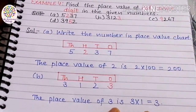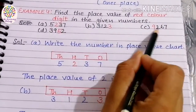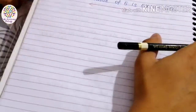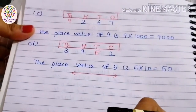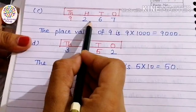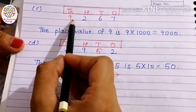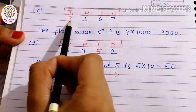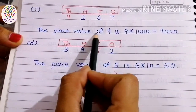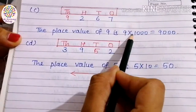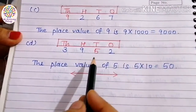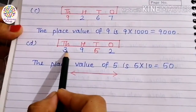Next part is 9267. We write the given number in the place value chart. The red color digit 9 is written under thousands place, so the place value of 9 is 9 × 1000 = 9000.